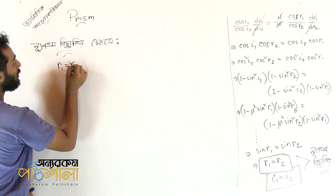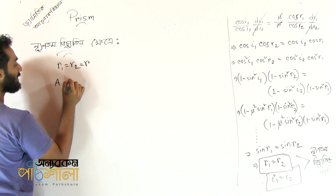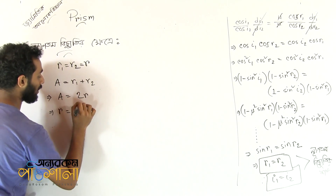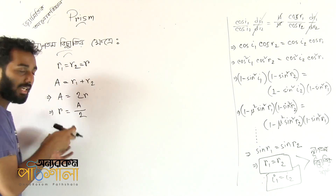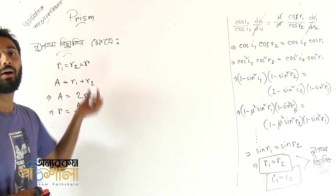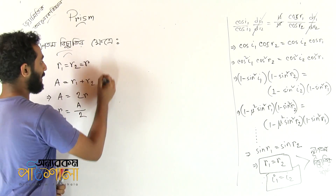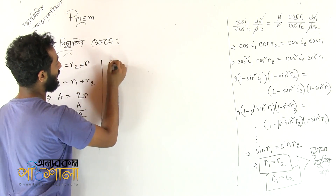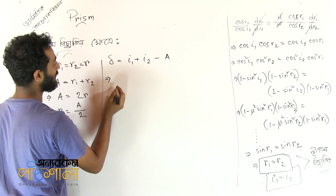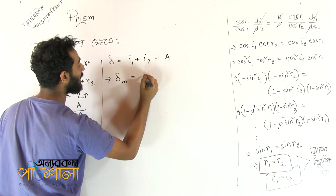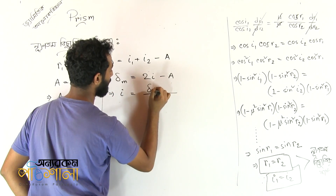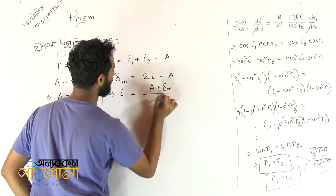So R1 is equal to R2. We write R1 plus R2 as 2R. Now δ equals I1 plus I2 minus A, and since I1 equals I2, we write 2i minus A equals δm, meaning i equals (A plus δm) divided by 2.